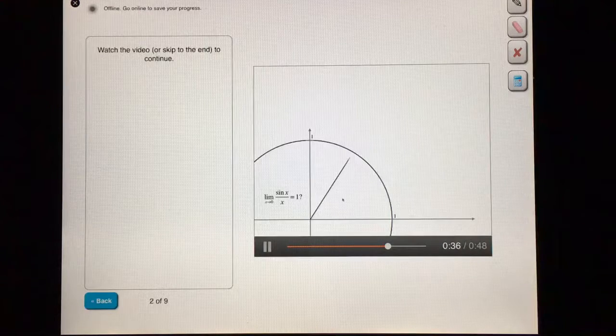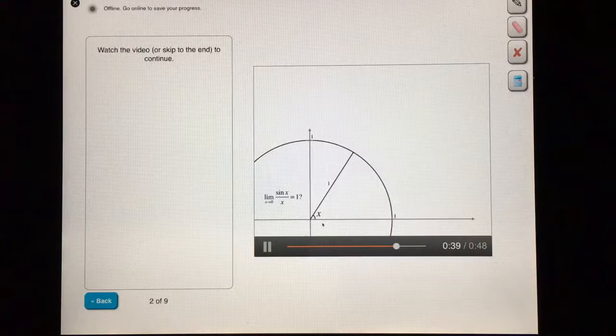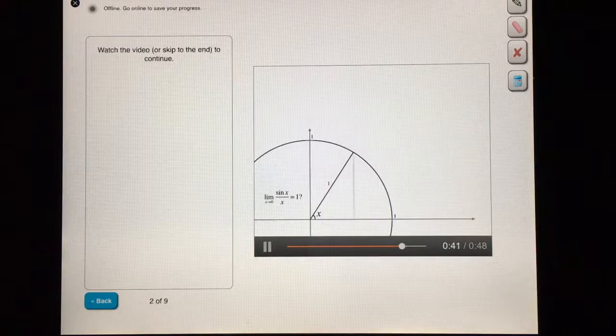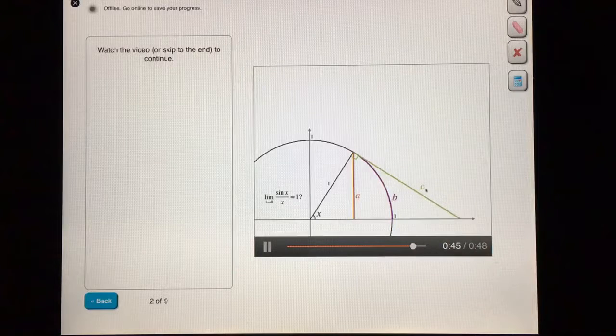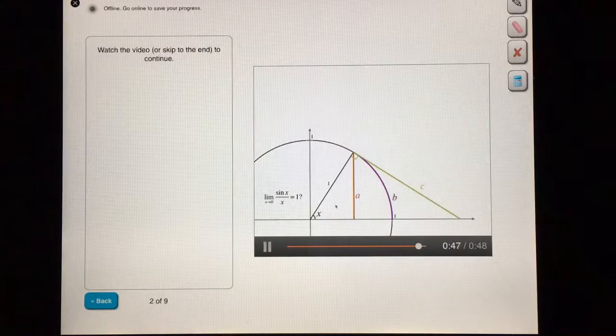Let's call the angle we're interested in x, and let's measure everything in radians. There are three lengths here that we're going to need. Let's call them a, b, and c. Can you figure out what they are in terms of x?